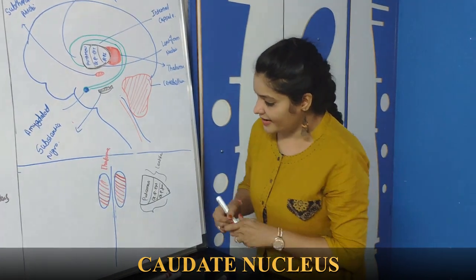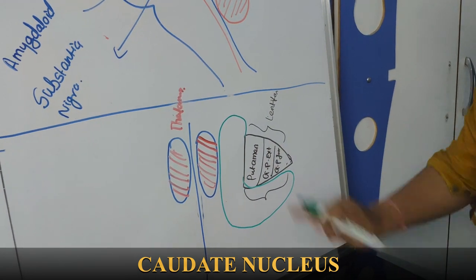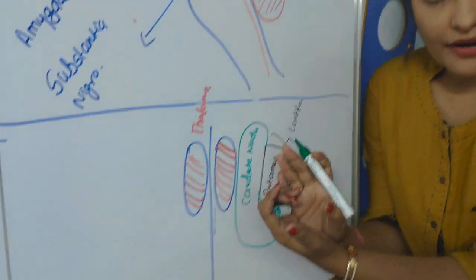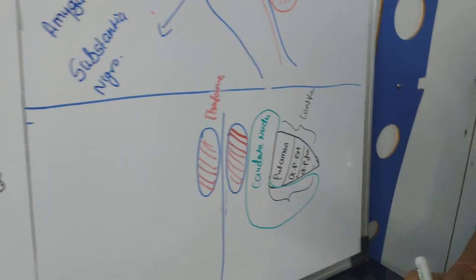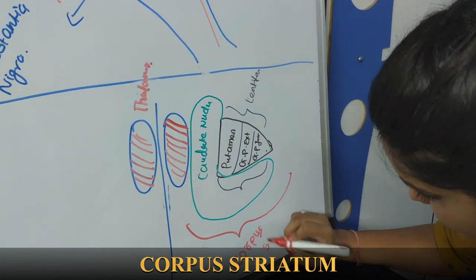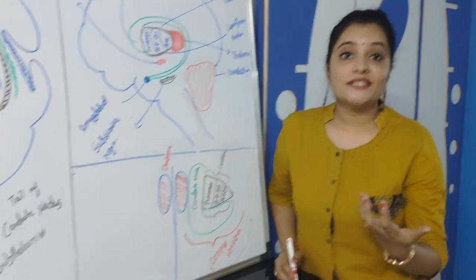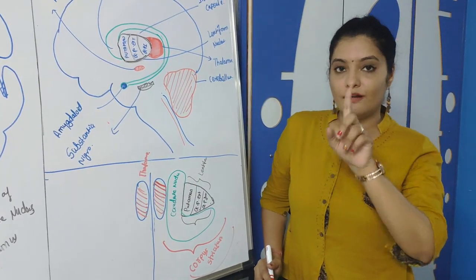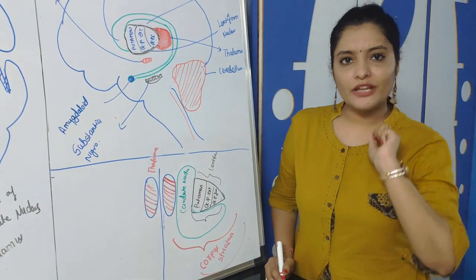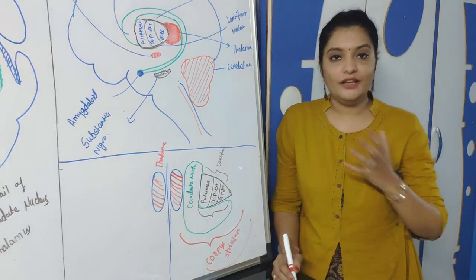So Corpus Striatum consists of two groups: Caudate Nucleus (the rich man) and Lentiform Nucleus (a group of three people — Putamen, Globus Pallidus Externa, and Globus Pallidus Interna). Together they form the company Corpus Striatum.